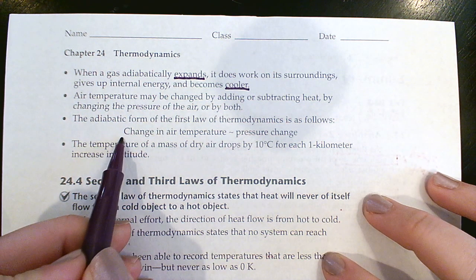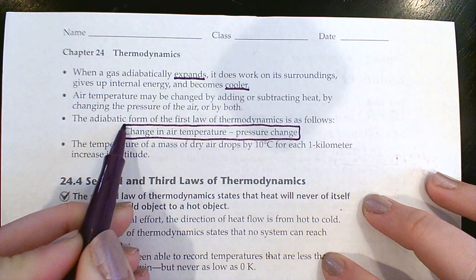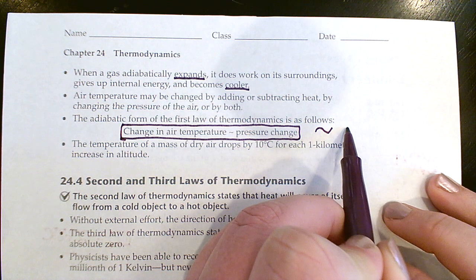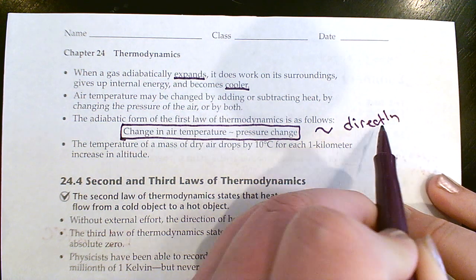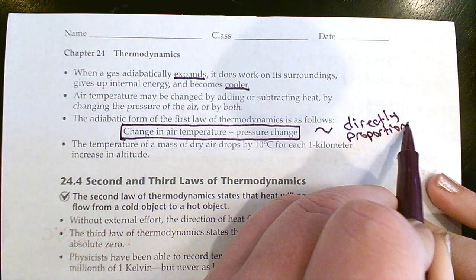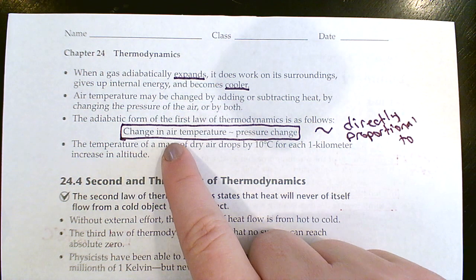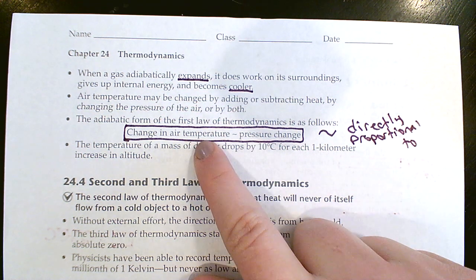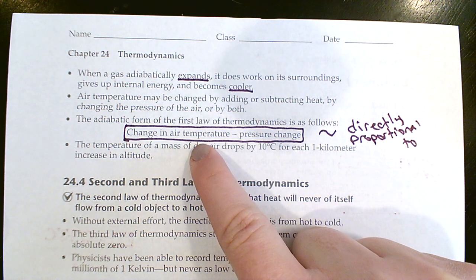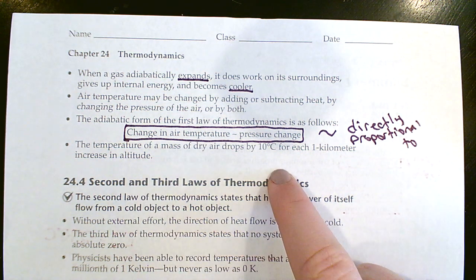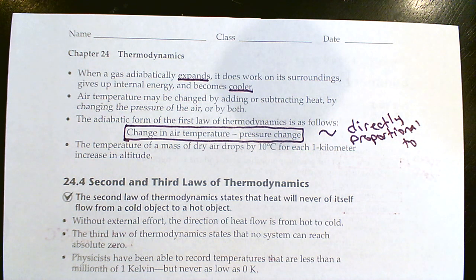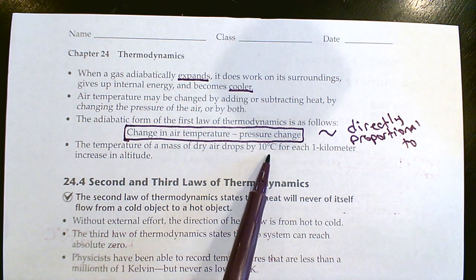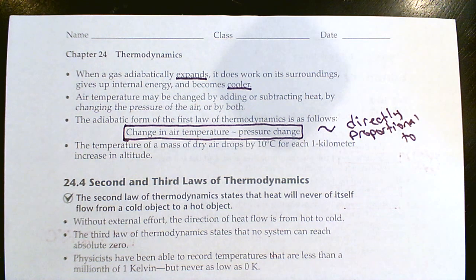The change in air temperature is directly proportional to pressure change — as pressure goes up, temperature goes up; as pressure goes down, temperature goes down. An interesting fact: the temperature of a mass of dry air drops by about 10 degrees Celsius for each kilometer increase in altitude, so it's getting colder every kilometer by about 10 degrees.